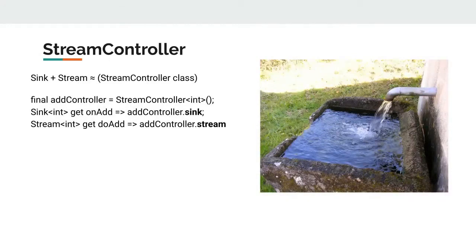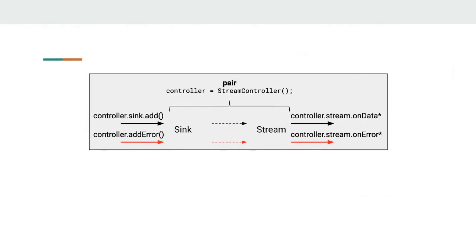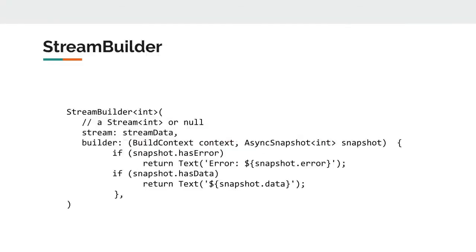When we write to a sink, it creates an event in the stream. To create a sink, we can call the sink property on a stream controller, and to get a stream, we call the stream property. Streams and sinks are also typed. When we create a pair using a stream controller, we get a sink to write to one side of the pipe and a stream to read from, with an additional pipe for errors. On the UI, we use stream builder to get updates — it has a stream parameter, and the UI is rebuilt when a new snapshot value arrives.